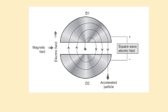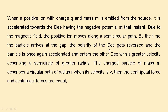There is no electric field inside a hollow cavity — that is a principle known to us. So inside the D, only the magnetic field is acting. In a magnetic field, a charged particle follows a circular path. By the time the particle arrives at the gap, the polarity of the Ds gets reversed, and the particle is once again accelerated and enters the other D with a greater velocity, describing a semicircle of greater radius.